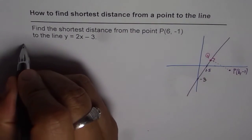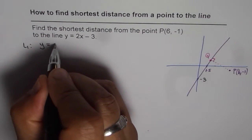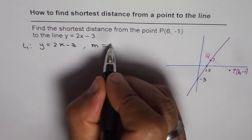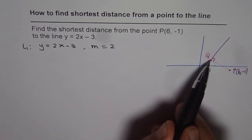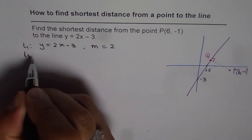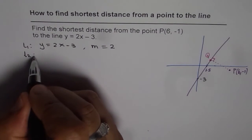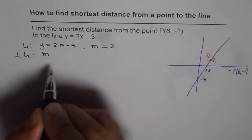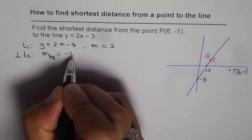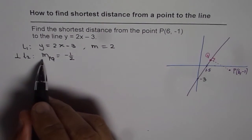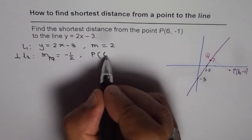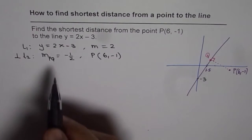So what we are given is a line y = 2x – 3. The slope of this line is 2. Now we need to find the equation of line PQ, which should be perpendicular to this line. Since this line is perpendicular, the slope of PQ should be the negative reciprocal, which is –½. That line should also pass through the given point (6, –1).